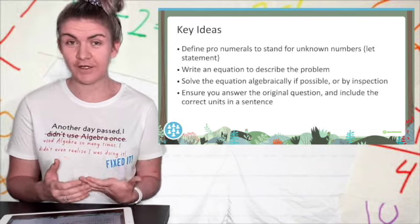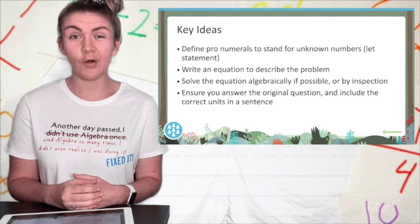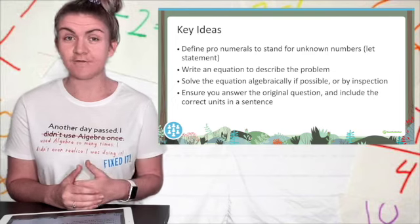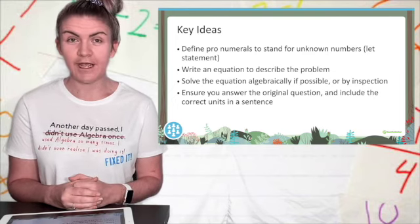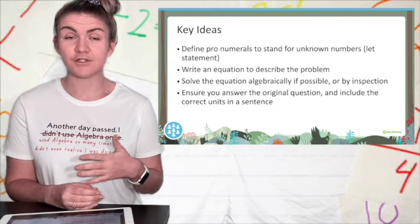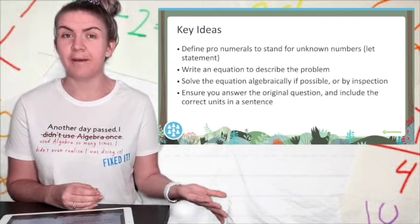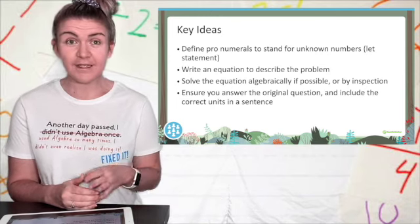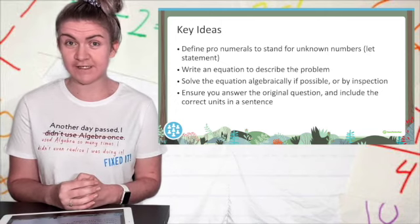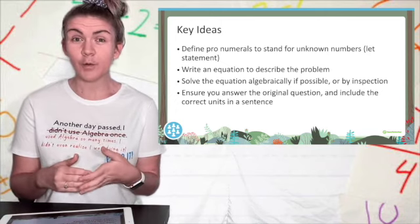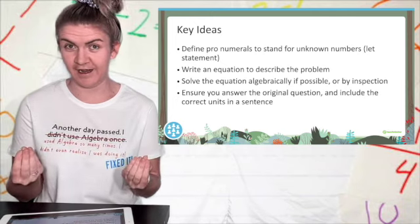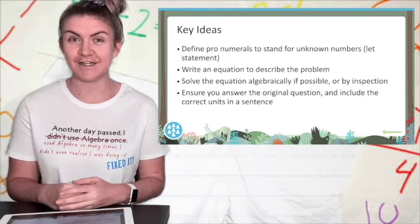Our steps for solving equations in real world problems are almost exactly the same as our steps for solving expressions. Step one is to define the pronumeral if it hasn't already been done, and we do that with that let statement that we know about. Step two is to write out the equation in a mathematical sentence. Step three is to then solve the equation either algebraically or using inspection if it's an easy one. And lastly, we need to ensure that we are answering the original question and what it's actually asking us, that we include our units, and we write it in a sentence.